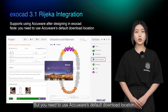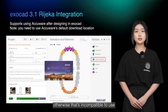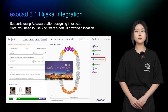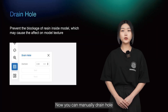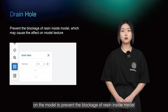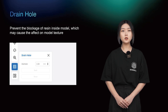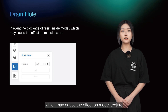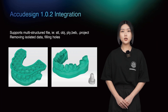You need to use AccuFab's default download location, otherwise it is incompatible to use. Now you can manually add drain holes on the model to prevent blockage of resin inside the model, which may cause an effect on model texture.